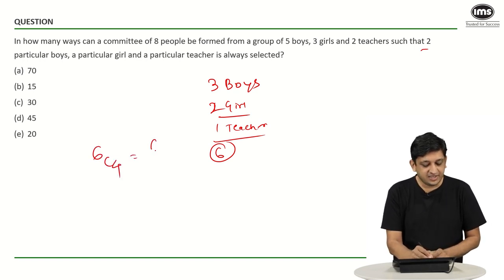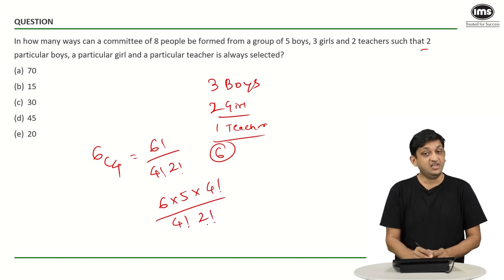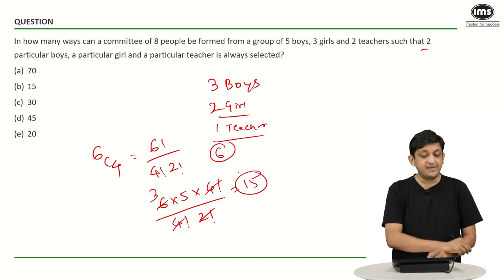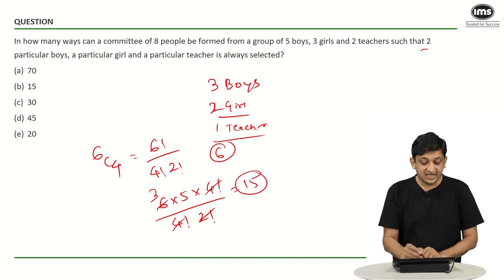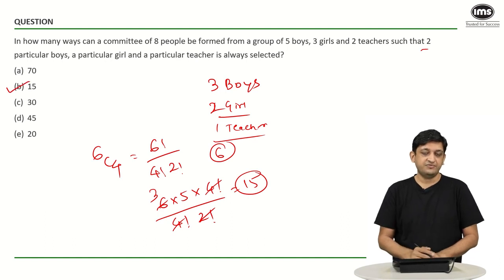6C4 is nothing but 6 factorial upon 4 factorial times 2 factorial, or 6 into 5 into 4 factorial upon 4 factorial times 2 factorial. The 4 factorial cancels out. Two threes are 6, so our answer is simply 3 into 5, that is 15. The correct answer here is option B, that is 15.